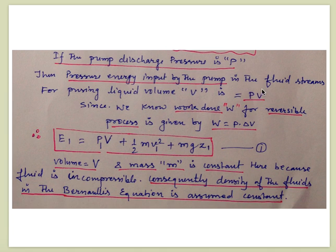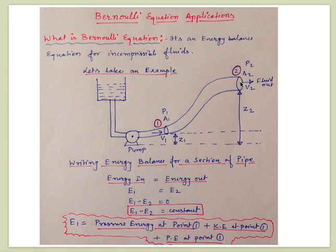So E1 can be written as: P1·V (pressure energy) plus (1/2)·m·V1² (kinetic energy) plus m·g·h1 (potential energy) at point 1. We assume that the mass flowing in and out is constant and the volume is also constant.